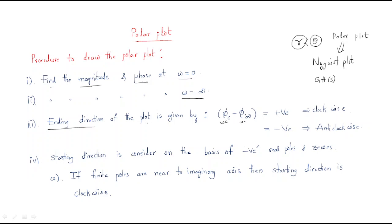The ending direction of the plot is given by: phase at omega equal to zero minus phase at omega equal to infinity. If this difference is positive, then the polar plot has a clockwise direction. If the difference is negative, then the ending direction of the polar plot is the anticlockwise direction.